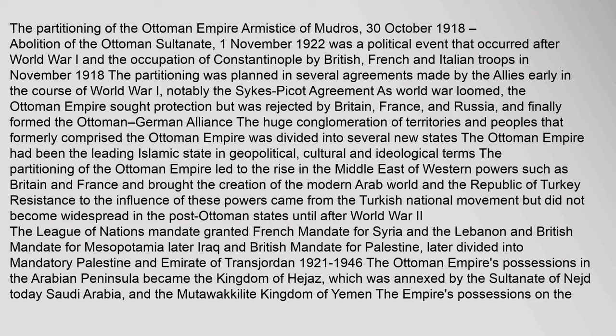The partitioning of the Ottoman Empire: Armistice of Mudros, 30 October 1918; Abolition of the Ottoman Sultanate, 1 November 1922. This was a political event that occurred after World War I and the occupation of Constantinople by British, French, and Italian troops in November 1918. The partitioning was planned in several agreements made by the Allies early in the course of World War I, notably the Sykes-Picot Agreement. As World War loomed, the Ottoman Empire sought protection but was rejected by Britain, France, and Russia, and finally formed the Ottoman-German Alliance.